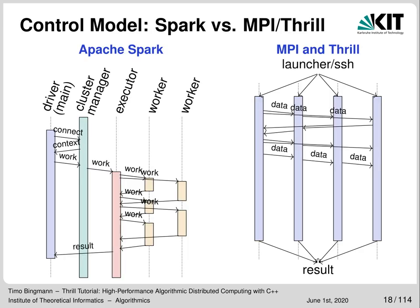Apache Spark has a hierarchical control model: there is the driver containing the main program, a cluster manager which runs continuously on the system, and an executor launched by the cluster manager that deals out work to worker threads. Thrill and MPI work differently — all workers are launched at the beginning and live until the program finishes. Data is passed between threads by sending messages, meaning all threads can collectively coordinate because they can implicitly know what the other threads are currently doing and which messages they can expect next.